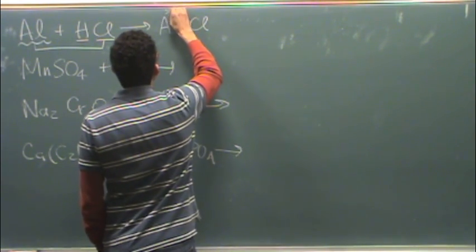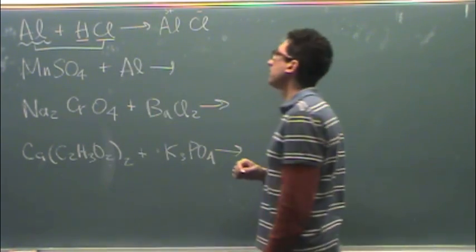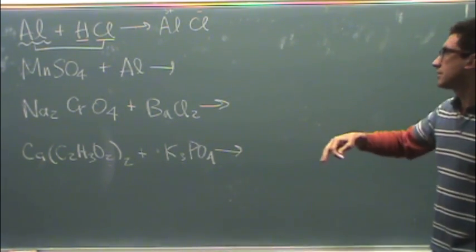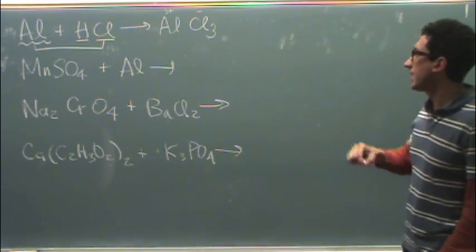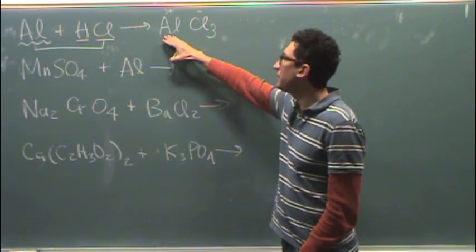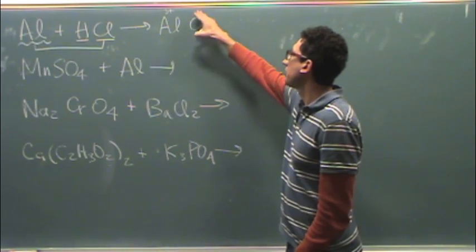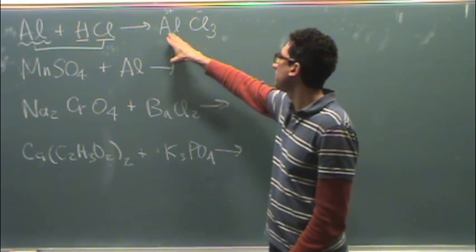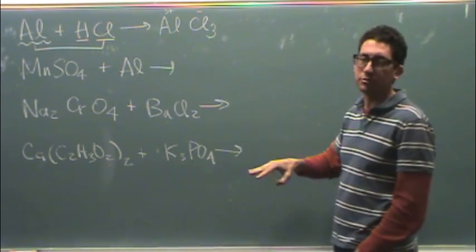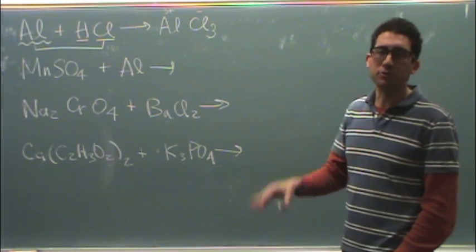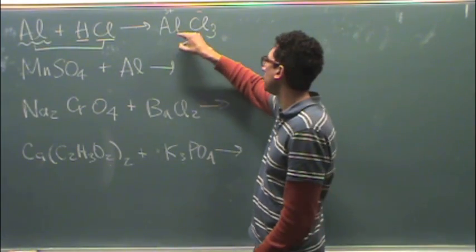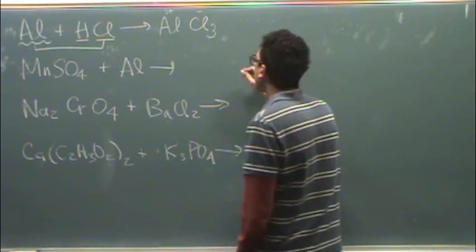So I have to put the aluminum with the chlorine. Now, the aluminum has a three plus charge and the chlorine has a minus one charge. So I need three chlorines to balance out the plus three charge aluminum. Three chlorines will make a total of a minus three on the chlorine side, plus three here, make this neutral. So AlCl3.